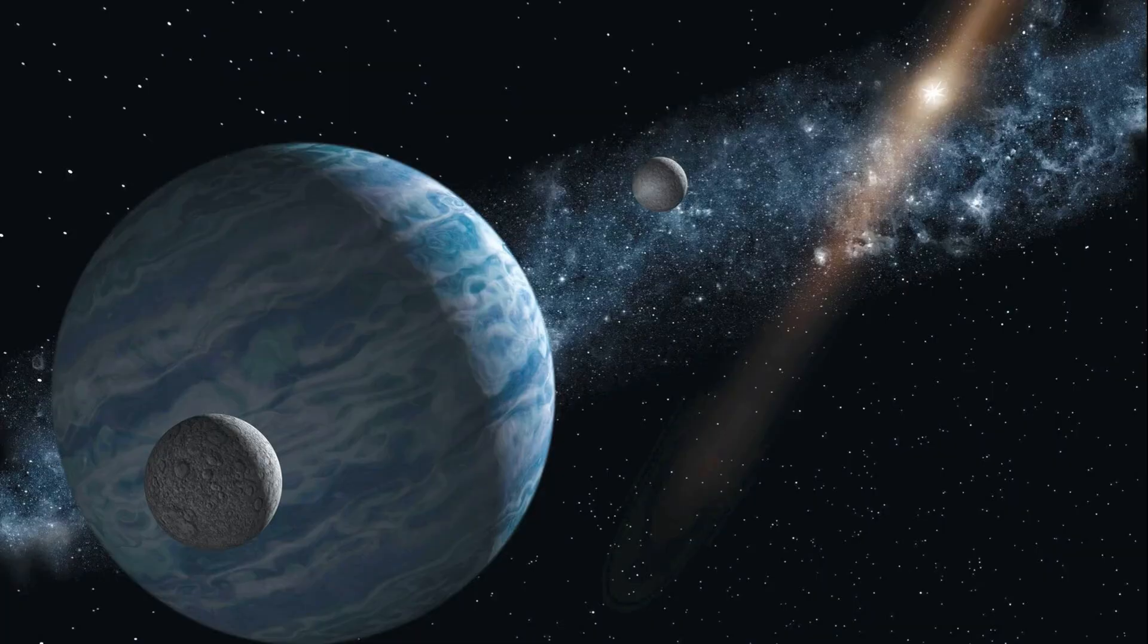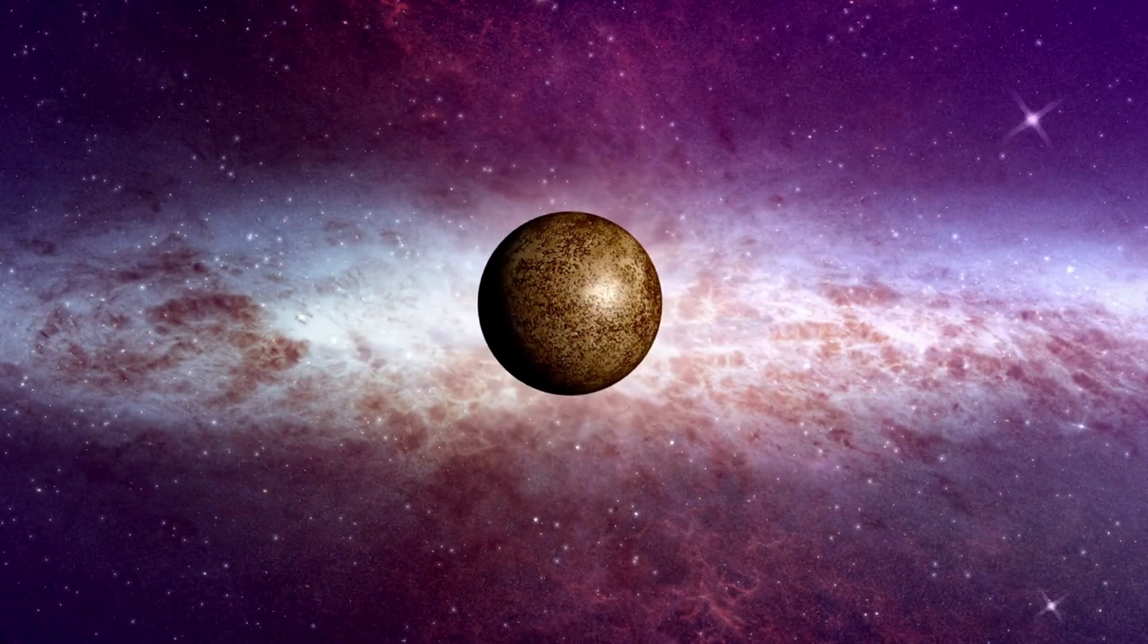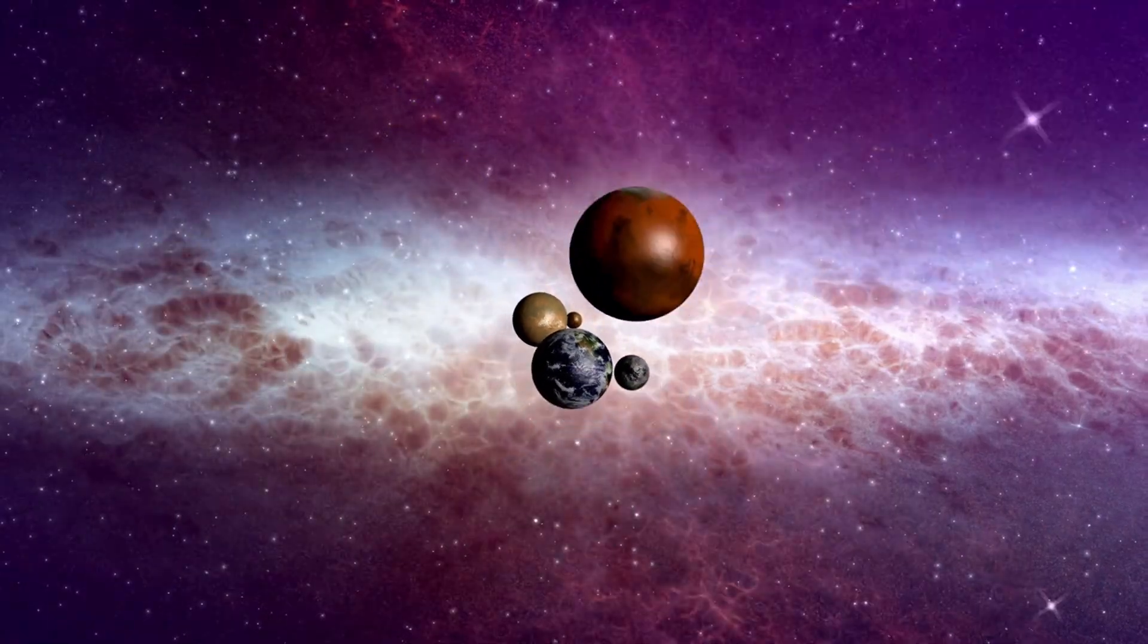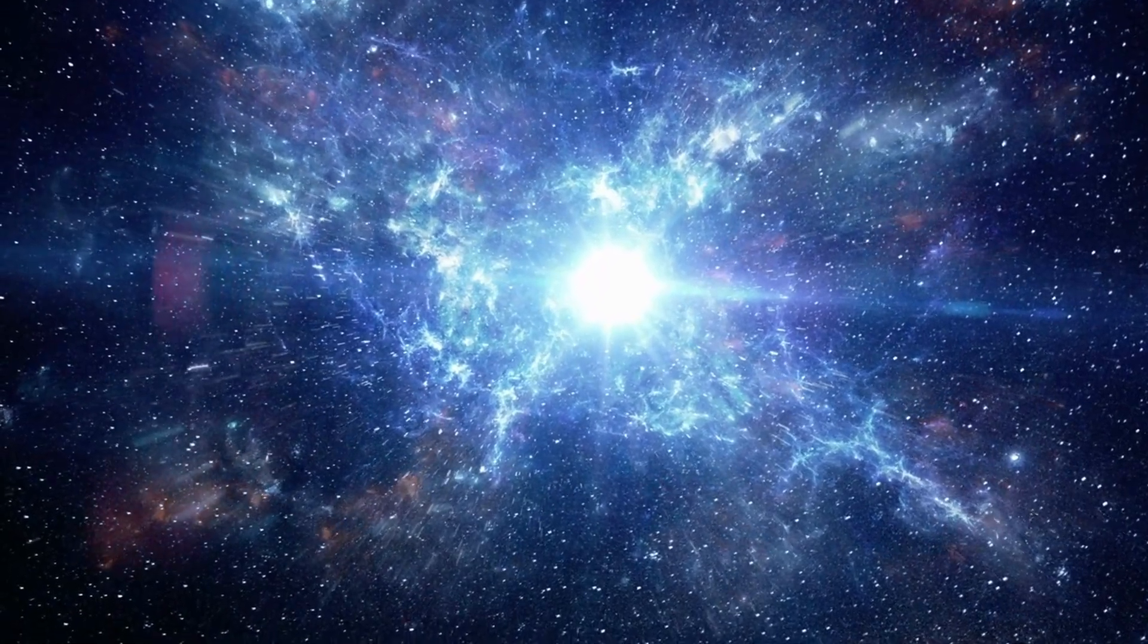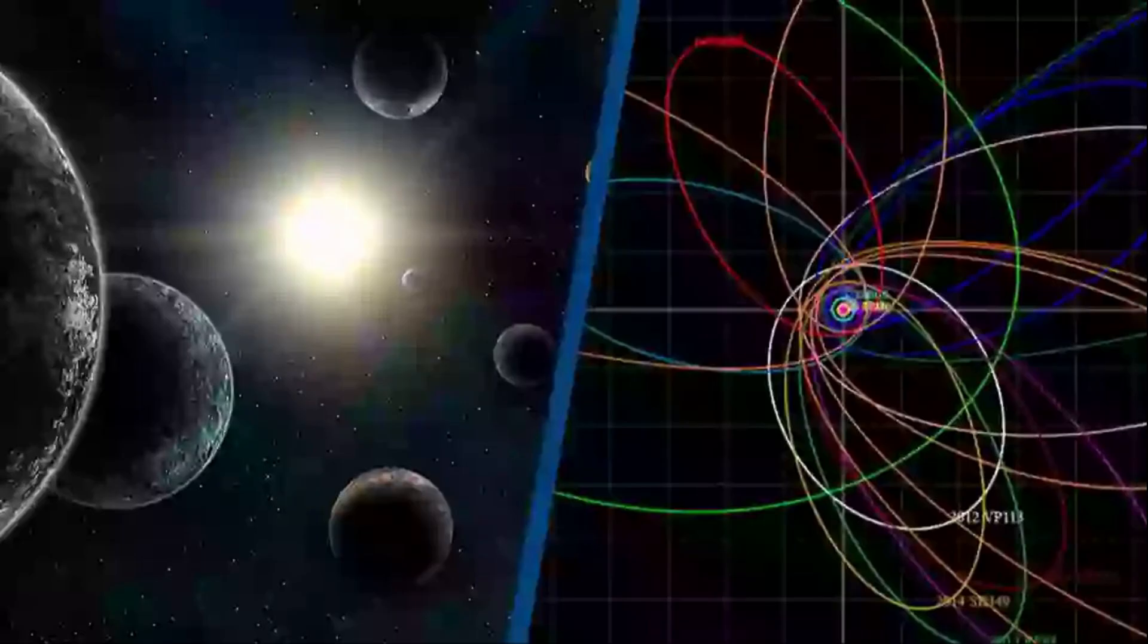If Planet Nine is found, it will change everything we know about the architecture of our solar system. It will reshape the definition of planets once again and raise new questions about how such a massive object formed and ended up so far from the sun. Did it migrate outward in the early days of the solar system? Was it captured from another star's orbit? Or is it something even stranger?